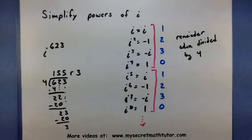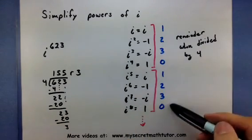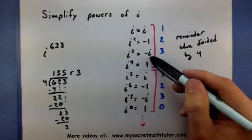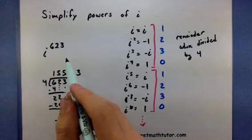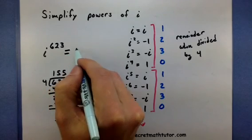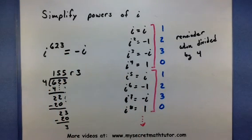That's the important number. So if we look at our pattern, 3 is associated with a negative i. So if I want to simplify i to the 623, I know it is simply negative i, just like that.